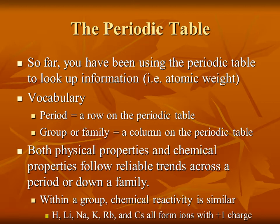Before we go any further, you need to remember a bit of vocabulary. Please remember that a period is a row on the periodic table. Moving horizontally means you are moving within the same period. A group or a family is the same thing as a column on the periodic table. So if you move up or down, you are looking at elements within the same group or the same family.